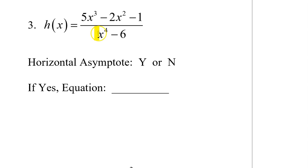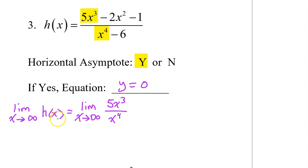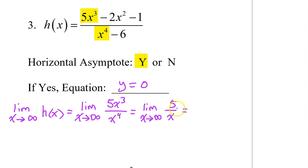For number 3, the degree of the denominator is bigger than that of the numerator. In a previous video, we learned that in this case, there is a horizontal asymptote, and specifically it will be y equals 0. Look at the right end behavior, which would equal 5x to the third power divided by x to the fourth power, which simplifies to 5 over x. As x approaches infinity, the denominator is getting bigger and bigger, so the overall value of the fraction is getting smaller and smaller, approaching 0.